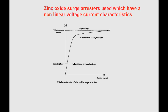Modern days, zinc oxide surge arresters are used, which have non-linear voltage-current characteristics as shown in this diagram. During normal voltage, it provides high resistance so that no problem occurs under normal operation. But during any transient overvoltage caused by lightning overvoltage or switching overvoltage, it provides low resistance or low impedance towards ground, thereby protecting the costly equipment from the surge.